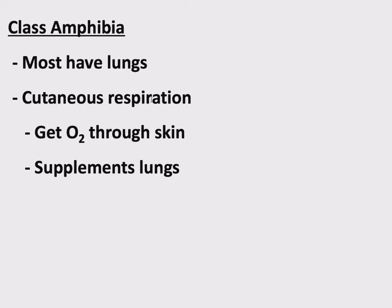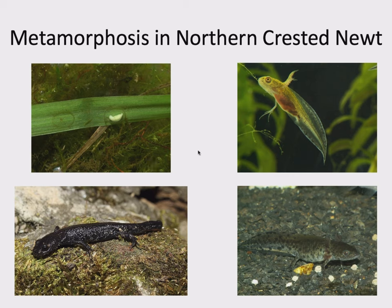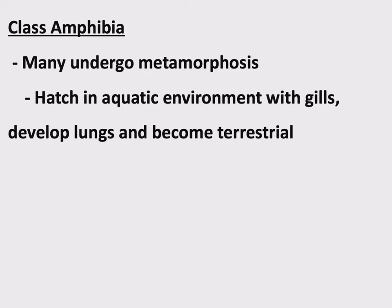Cutaneous respiration is done to supplement their lungs, which are not the best. Another trait of amphibians is metamorphosis. Other amphibians do this as well — for example, the northern crested newt goes from its egg through tadpole stages, growing four legs and becoming terrestrial. Many amphibians hatch in an aquatic environment with gills, and then eventually develop lungs and become terrestrial.